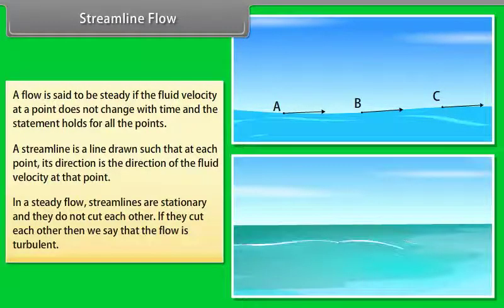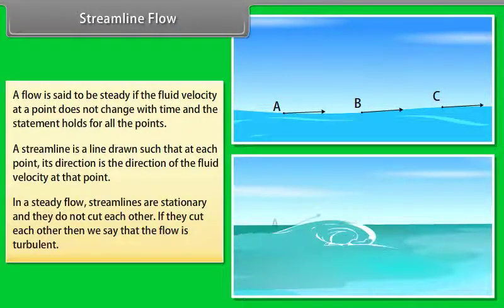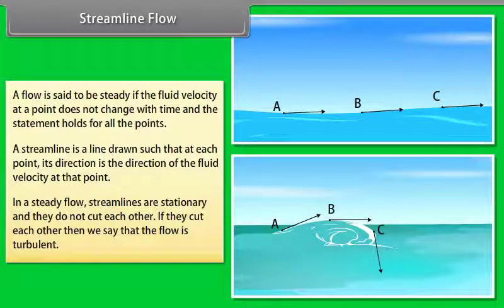In a steady flow, streamlines are stationary and they do not cut each other. If they cut each other, then we say that the flow is turbulent.